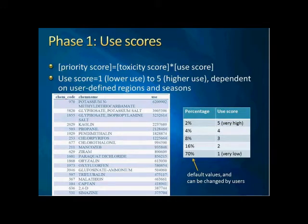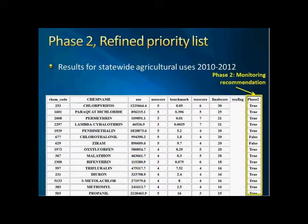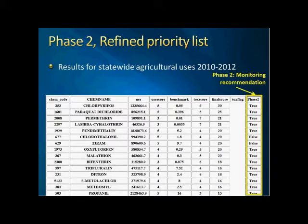Now that we have both the toxicity score and use score, the phase one priority list can be generated, and then we move to phase two: refine the priority list. Before showing the details, I want to show the results. This is based on exactly the same priority settings — statewide agriculture annual use for three years. The only difference is one more column attached to the original phase one result, and this column is for the phase two monitoring recommendations. There are only two values: True means the model will recommend this chemical for monitoring, and False means the model will recommend excluding this pesticide.